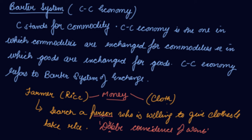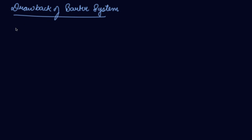So this is the barter system. The drawbacks of the barter system: number one is difficulty of double coincidence of wants. As a farmer, if you want to exchange rice for clothes, it was very difficult to find a person who is willing to buy rice and give you the clothes. So double coincidence of wants is a precondition for the barter system of exchange.